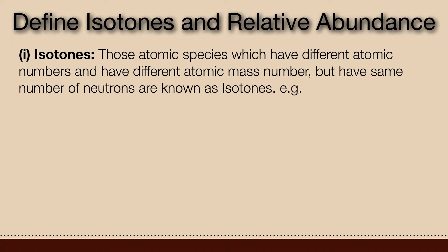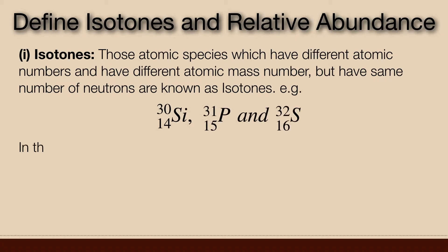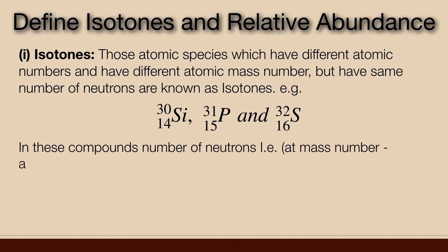For example, Silicon-30, Phosphorus-31, and Sulphur-32 are isotones. In these compounds, the number of neutrons — i.e., atomic mass number minus atomic number — is the same, which is 16.